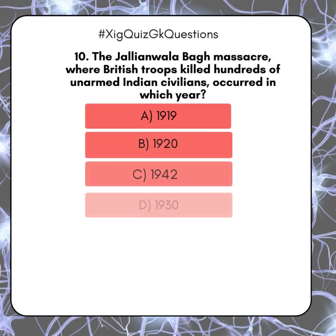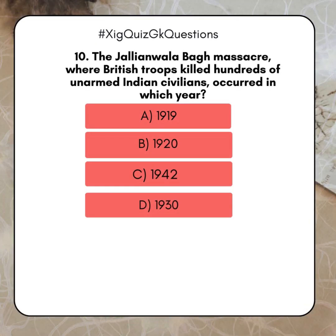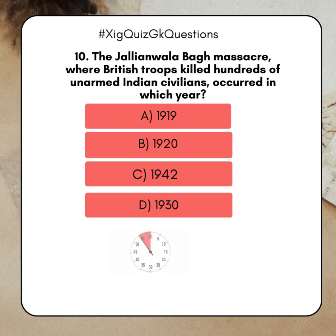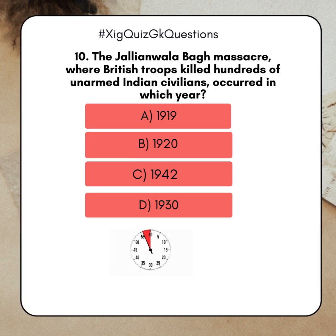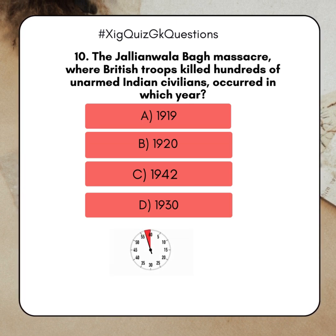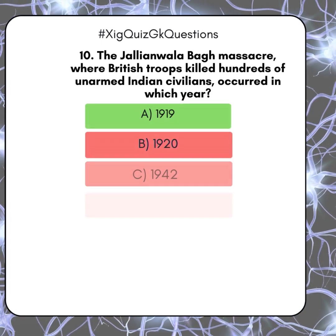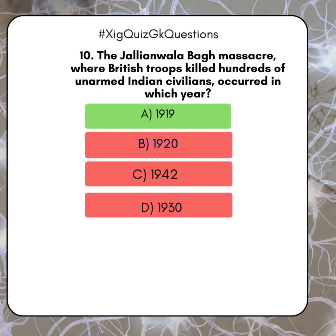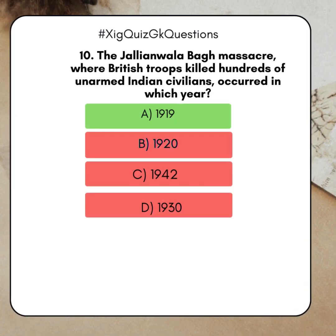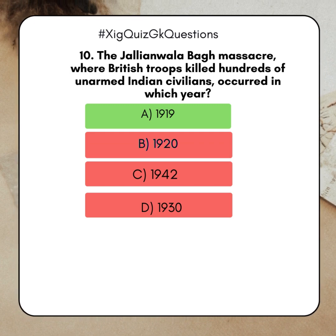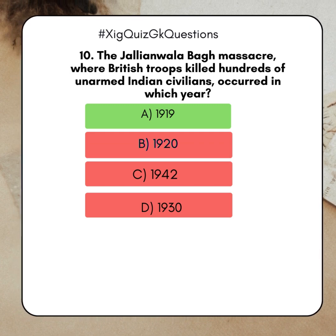The Jallianwala Bagh Massacre, where British troops killed hundreds of unarmed Indian civilians, occurred in which year? A. 1919. B. 1920. C. 1942. D. 1930. Answer: A. 1919.